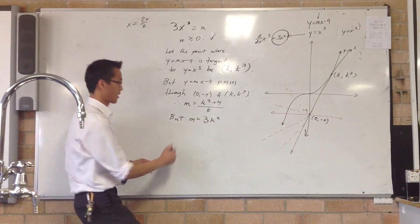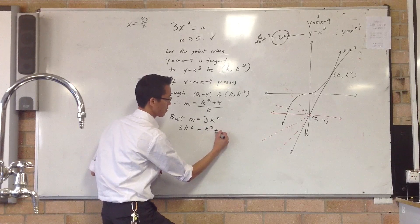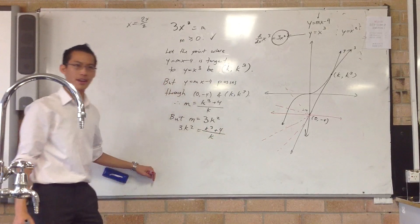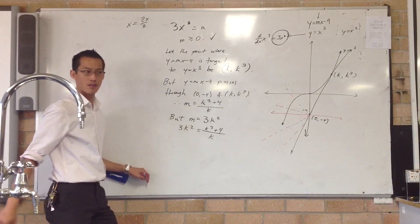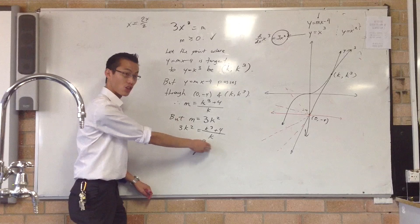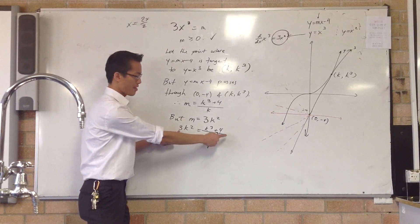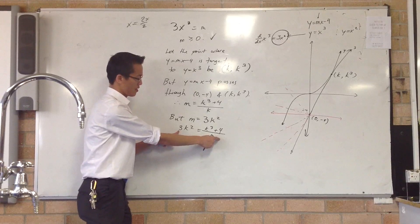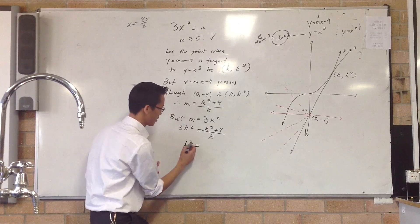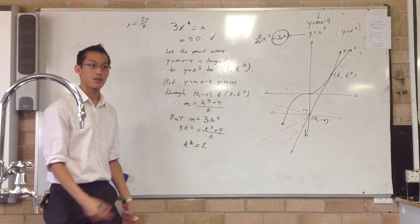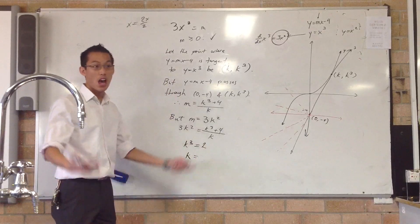Alright, this we can solve. So, I can say 3k squared is equal to that. So, crunch some numbers, multiply your k across, you're going to get some k cubed over here and some k cubed over here. So, you're going to have 2 here, and then there's just going to be this number 4 over here. Then you divide by 2, and you're going to get this. Sorry, that's 3. So, k is the cube root of 2.